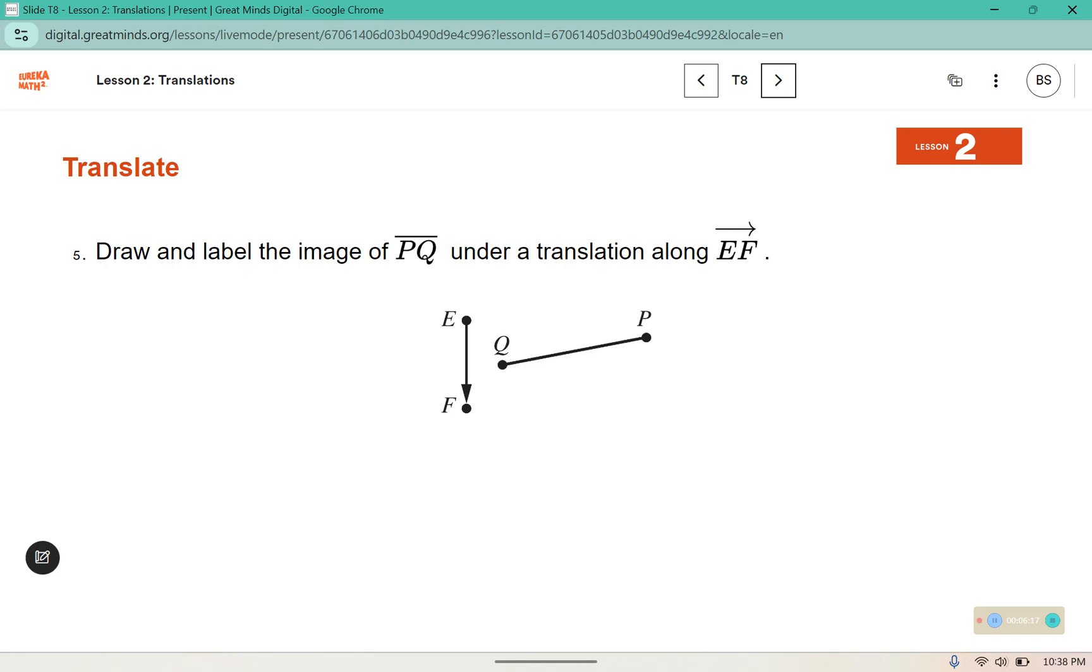Draw and label the image of segment PQ under a translation along EF. So we are going to start by extending a line through EF. This is done on your workbook. On your tracing paper, trace the vector, making sure to get the end point and the arrow point, and trace the segment.